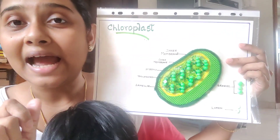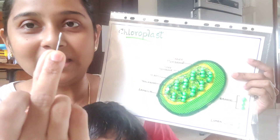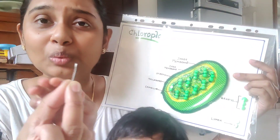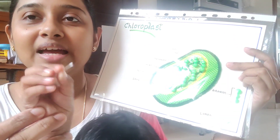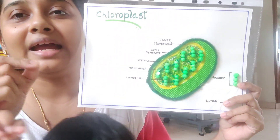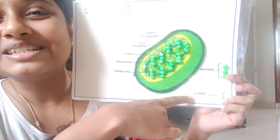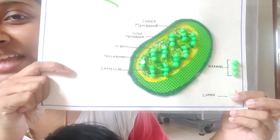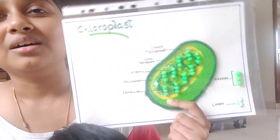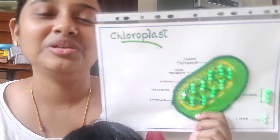I gave her an activity to just put the thermocole balls inside a string. I told her if there is a group of thylakoids, it is called a granum. And then this lumen — she picked it up once she saw it here in this model. If the thylakoid is cut into two, it is called lumen. Today is the last day and from next week onwards it is just going to be a review.